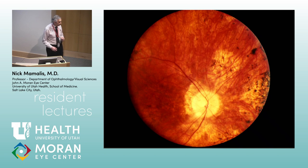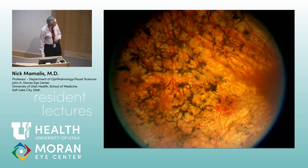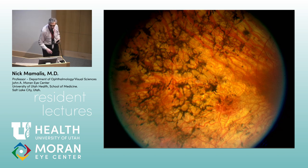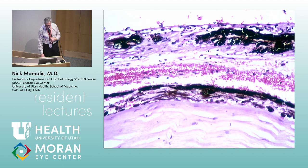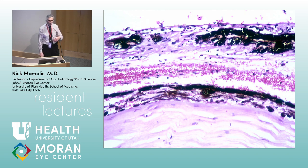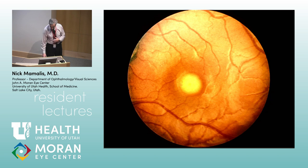Looking at this color fundus photo: the optic nerve has pallor, the vessels are very attenuated, and there is pigment clumping — this is retinitis pigmentosa (RP). The bony spicule pattern of pigment occurs because the pigment gets released from the RPE as it gets damaged, diffuses to the vessels, and deposits around them. There's also chalky white pallor of the disc and attenuated arterioles — classic RP features.